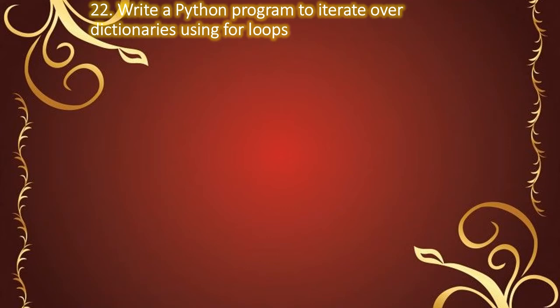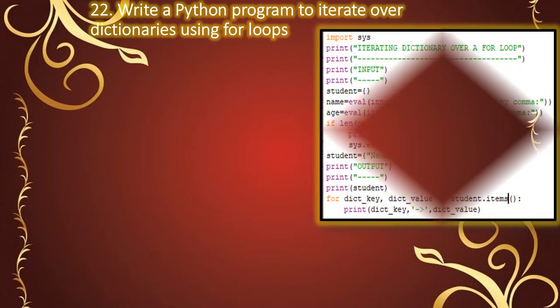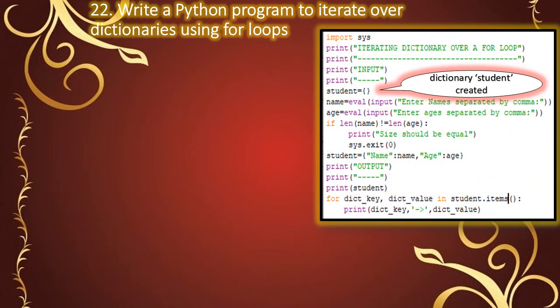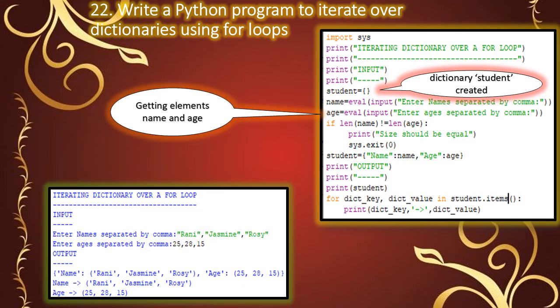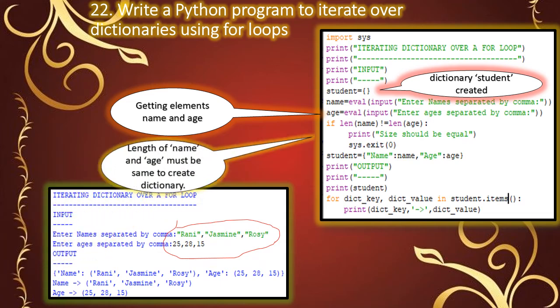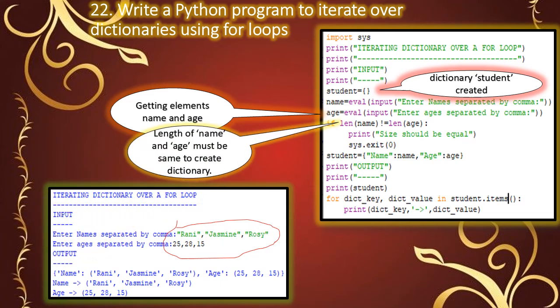Next, we will iterate the dictionary using a for loop. We create an empty dictionary 'student', get the name and age values, check their lengths are equal, then assign them to the dictionary. To iterate, we use: for dictionary_key, dictionary_value in student.items(). The student.items() method returns key-value pairs.